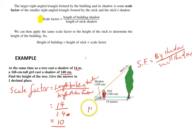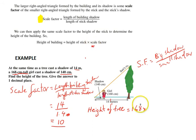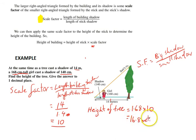Step two is to find the height of the building — in this case, the height of the tree. The height of the tree is equal to the height of the stick, which is 168 centimetres, but again we want that in metres, so 1.68 metres, times the scale factor of 10. That gives us 16.8 metres. The height of this tree is equal to 16.8 metres.